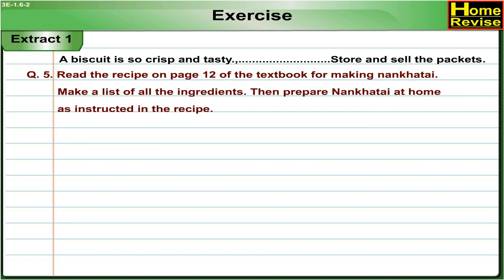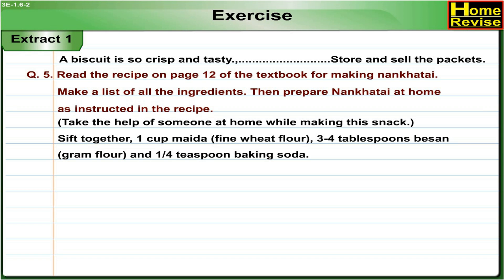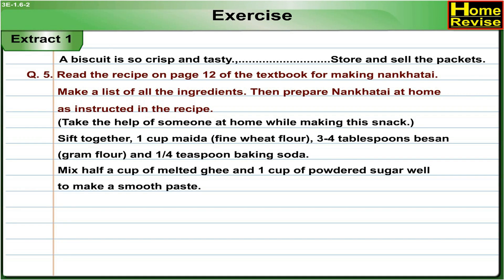Question 5: Read the recipe on page 12 of the textbook for making naan khatai. Make a list of all the ingredients, then prepare naan khatai at home. Take the help of someone at home while making the snack. Ingredients: Sift together 1 cup maida (fine wheat flour), 3–4 tbsp besan (gram flour), and 1/4 tsp baking soda. Mix half a cup of melted ghee and 1 cup of powdered sugar well to make a smooth paste.